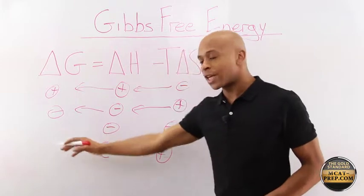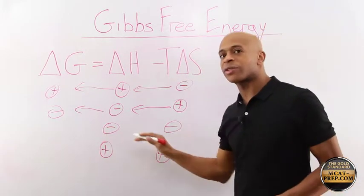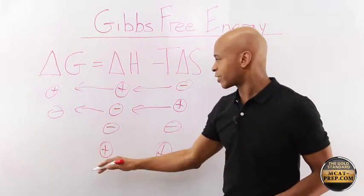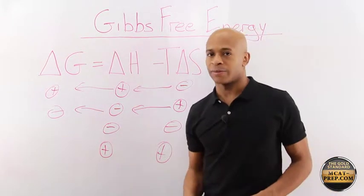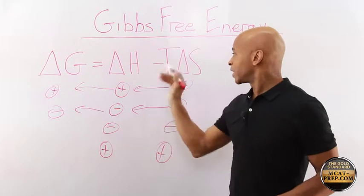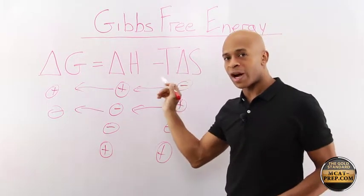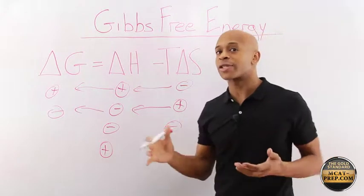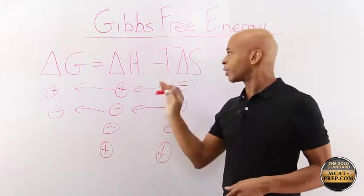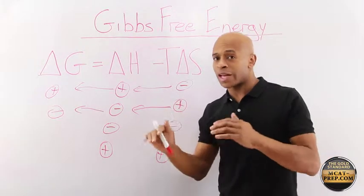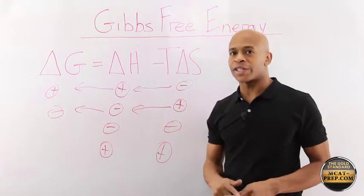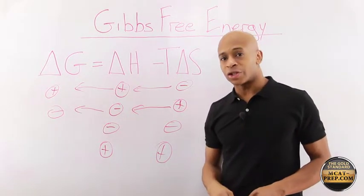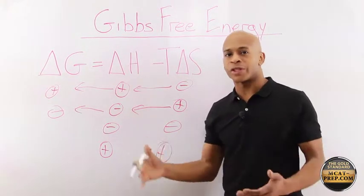Delta G can be positive or negative when the signs are the same. So you can't say it'll always be this or always be that. When the signs are different, it's easy. And when the signs are the same, then temperature can override what's happening in the equation. And sometimes they'll actually ask you a question like that to see if you understand that temperature will dominate, depending on what the values are, temperature will dominate the expression and therefore decide what the delta G value is in a particular situation.